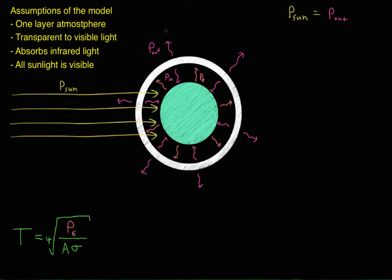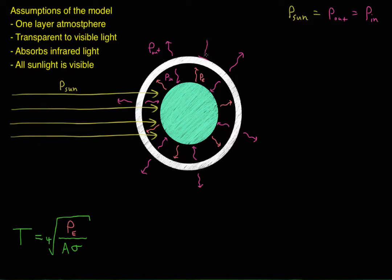The next thing I want to notice is that the power radiated outward from this atmosphere — this spherical shell, or just a circular shell in this drawing — the power radiated outward is equal to the power radiated inward. So all of these things are equal to one another: P-out equals P-in. The easiest way to make sense of that is to remember that we're thinking of this atmosphere as one object. The way black body radiation works is the light is radiated perpendicularly away from the surface, and on the inside, this is also a surface, so it's also radiating inward.